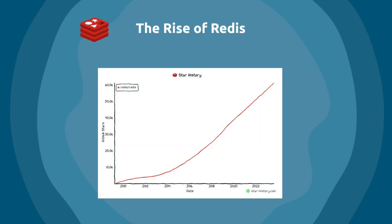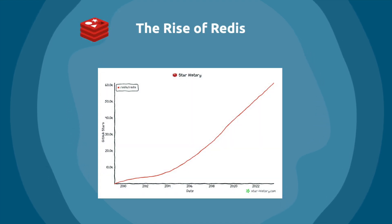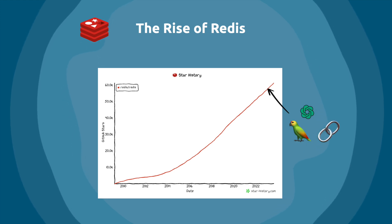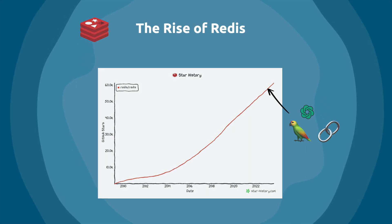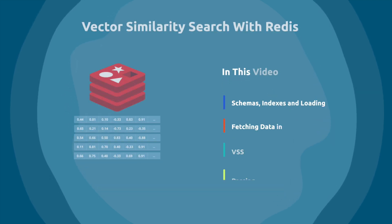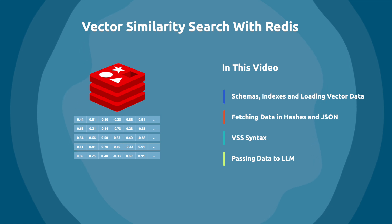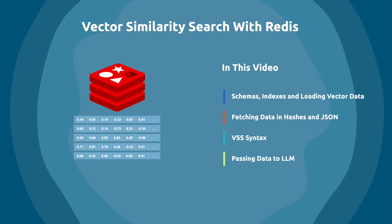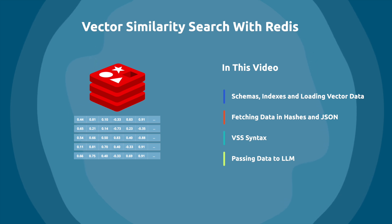The popularity of Redis has been on the rise for years now, but given the explosion of interest in vector data and the fact that Redis supports vector similarity search, I have a feeling that Redis is about to become even more popular. In this video, we're going to dive into the vector similarity search capabilities of Redis. I'm going to show you how to create schemas and load vector data into the database. You can store vector data either in a Redis hash or as a JSON object — I'm going to cover both.